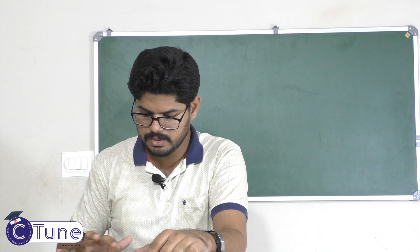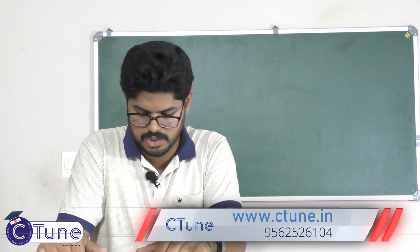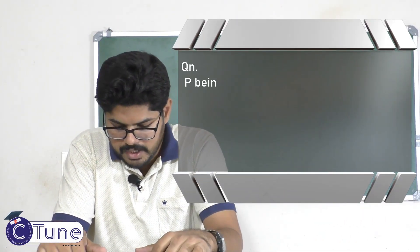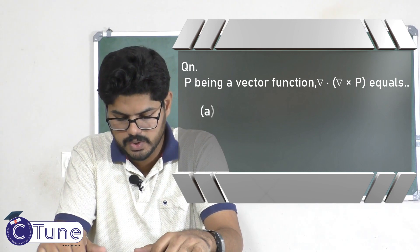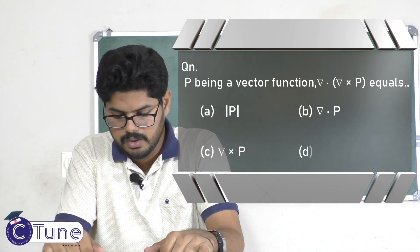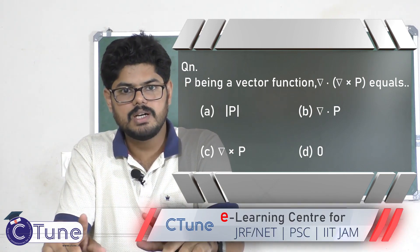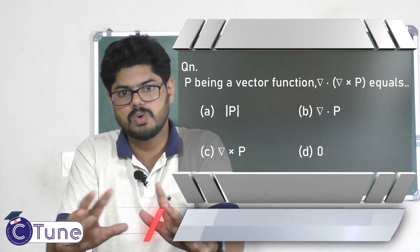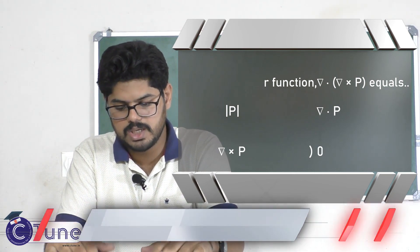Here is a basic practice question: P being a vector function, del dot (del cross P) equals what? This is a basic vectors concept. The divergence of a curl, and the curl of a gradient, are always zero. So the answer is zero.